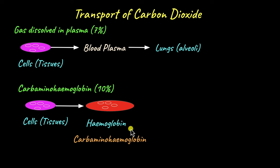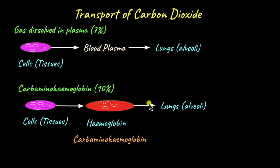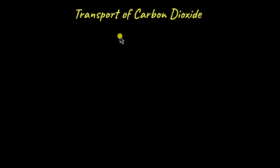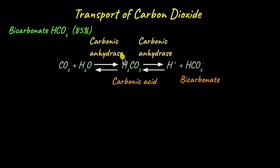In the form of carbaminohemoglobin, red blood cells carry carbon dioxide to the lungs. At the lungs, the carbaminohemoglobin dissociates back to give hemoglobin and carbon dioxide, and the carbon dioxide can then be exchanged for oxygen and exhaled out. The last and most important method by which carbon dioxide is transported is in the form of bicarbonate ions. We already saw this equation in the previous video where carbon dioxide reacts with water in the presence of carbonic anhydrase to give the highly unstable carbonic acid.